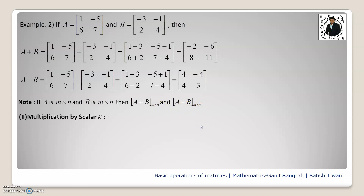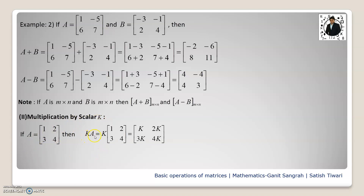Now let us see multiplication by a scalar quantity k, where k is a constant. If we have matrix A and we multiply it by k, we write k into A. This k multiplies every element, so we get k into 1, k into 2, k into 3, and k into 4 — written as k, 2k, 3k, and 4k. So scalar multiplication means we take a scalar quantity and multiply each element of the matrix by it.